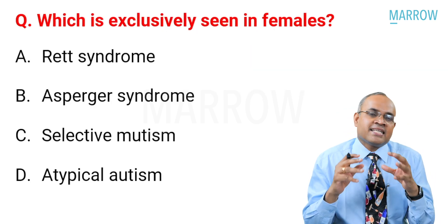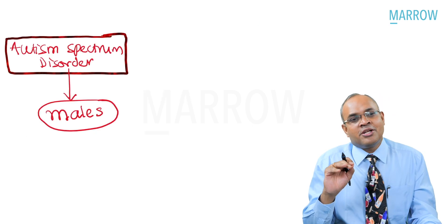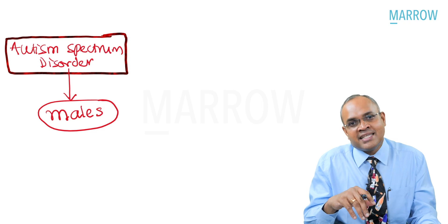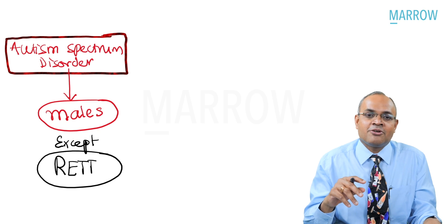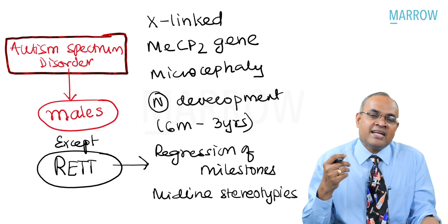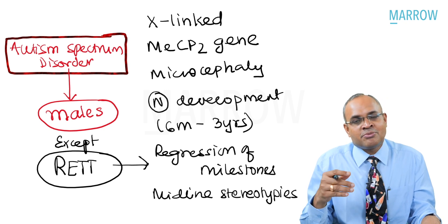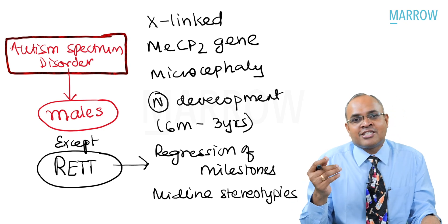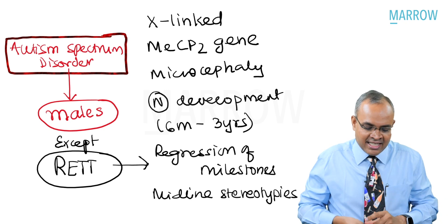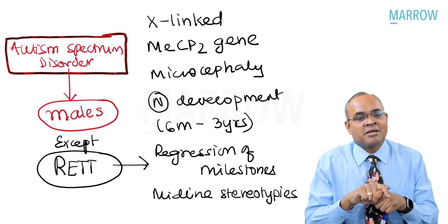The next question: which condition is exclusively seen in females? Options include Rett syndrome, Asperger's syndrome, selective mutism, and atypical mutism. All autism spectrum disorders are more commonly seen in males, except Rett syndrome. Rett syndrome is an X-linked condition caused by a mutation in the MECP2 gene. These children have short stature, sometimes microcephaly, normal development for about six months to three years, followed by regression of milestones. A very classical feature is midline stereotypic behaviors.